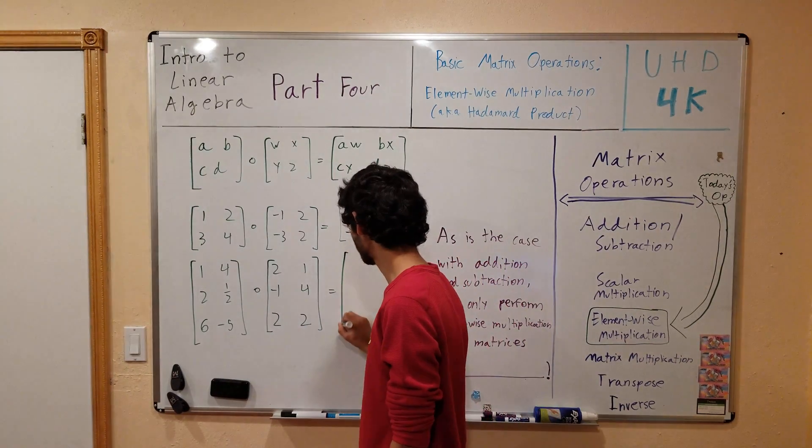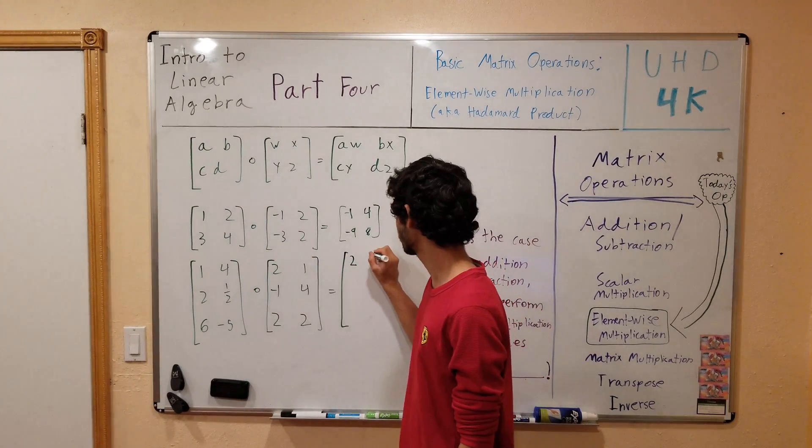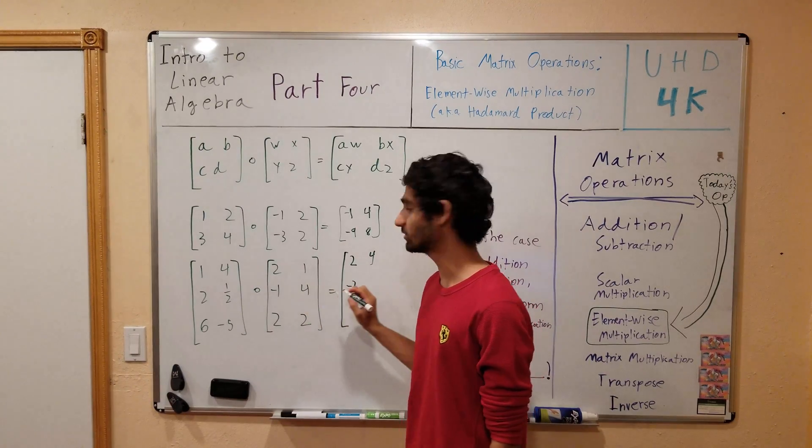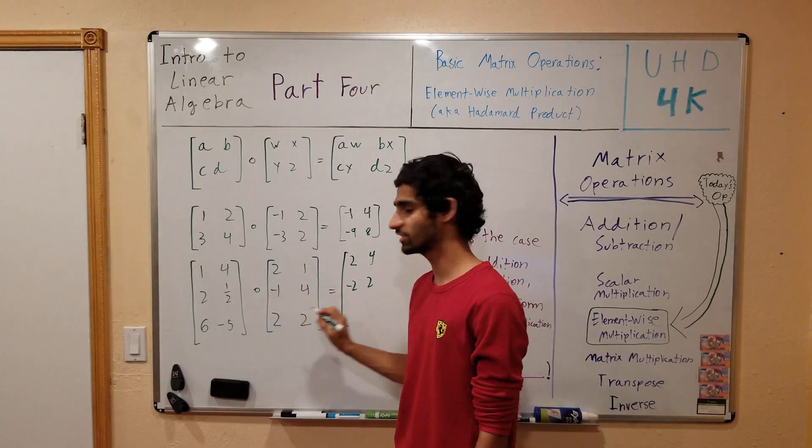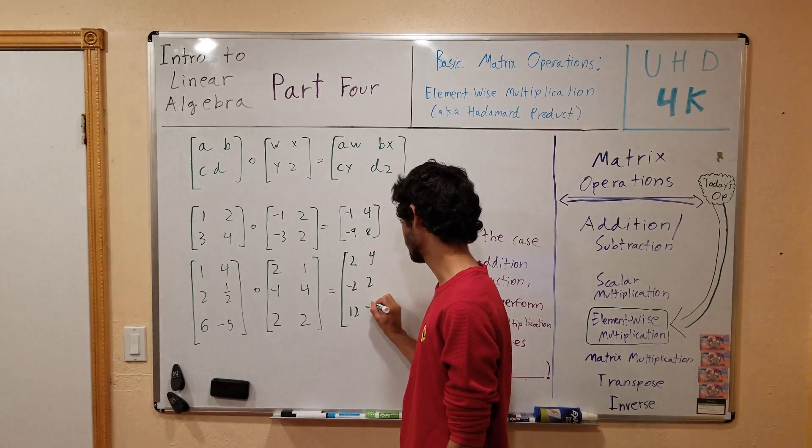Once again, I'm going to multiply the corresponding elements. 1 times 2 is 2, 4 times 1 is 4, 2 times -1 is -2, 1/2 times 4 is 2, 6 times 2 is 12, and finally -5 times 2 is -10.